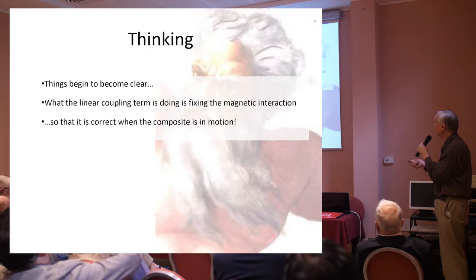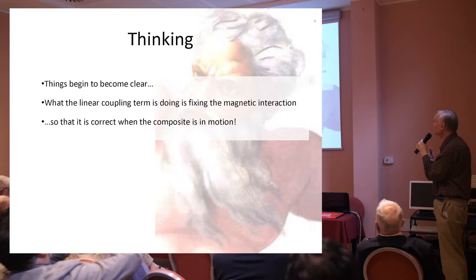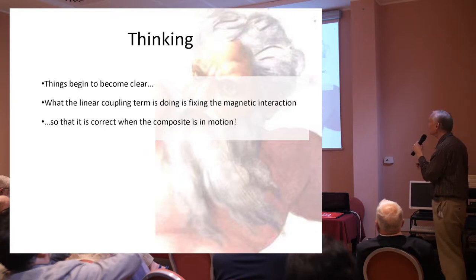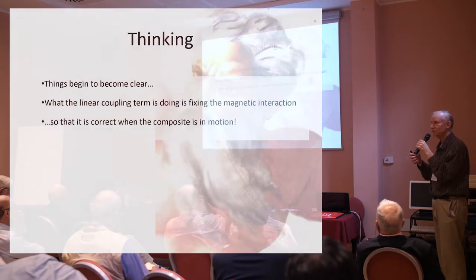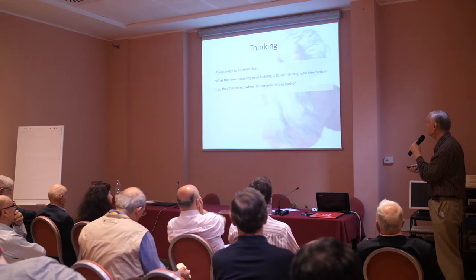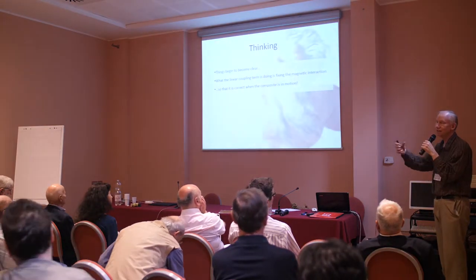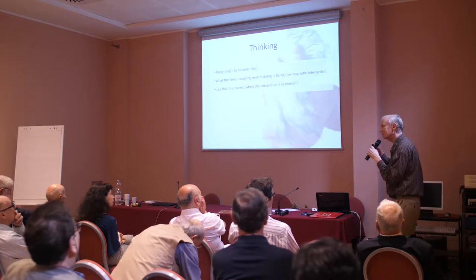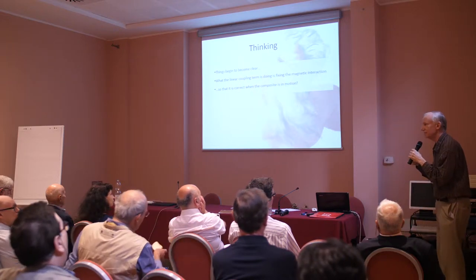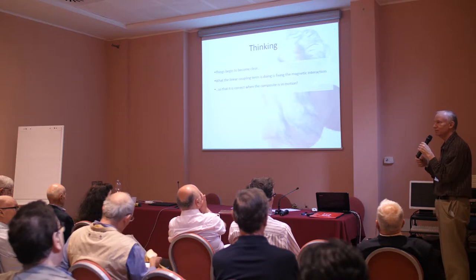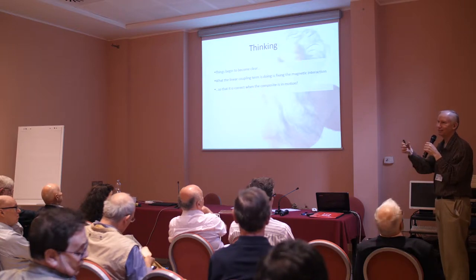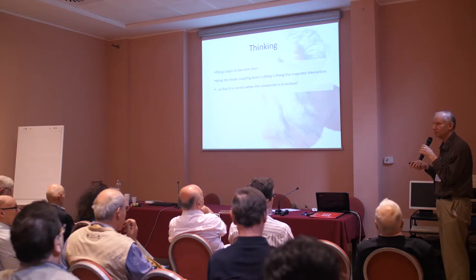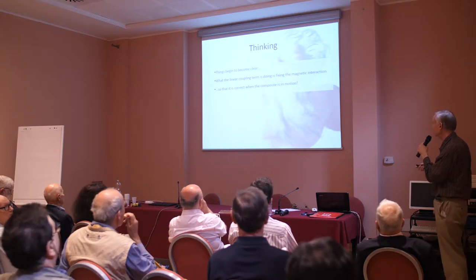The phonon-nuclear coupling term — the linear coupling term — is just fixing the magnetic interaction in the simple example, and it fixes the nuclear interaction when the systems are boosted. In free space, if you're just moving straight, you can go into the frame of motion. But if you're moving back and forth, then you have to be right going this way and right going that way, so you actually have a real coupling that you can't simply rotate out.